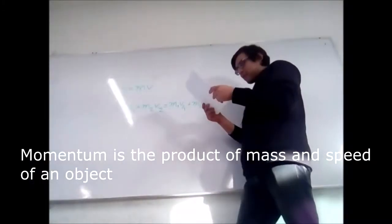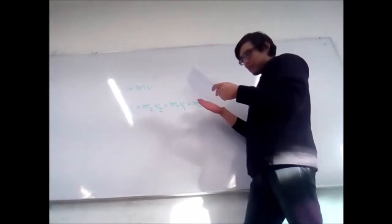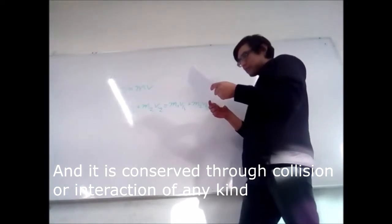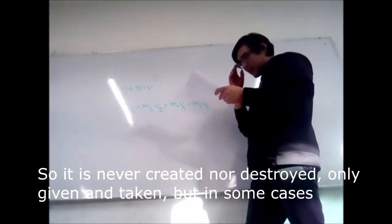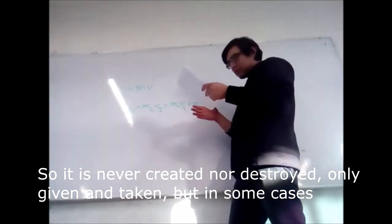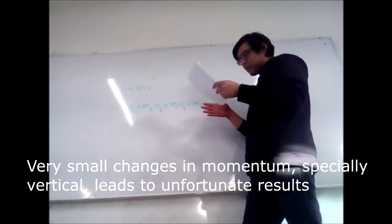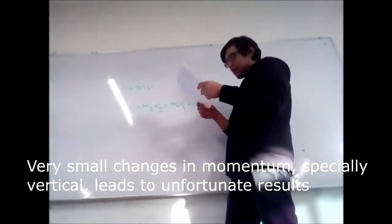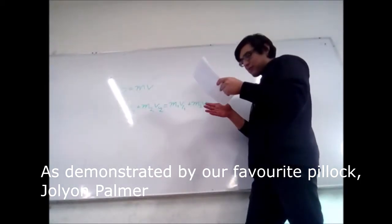As shown here, the amount of movement — or momentum — is simply the product of the mass and the velocity of the object. It is considered in any body or interaction; in any case, it is not destroyed, only exchanged. Although in some cases, small changes in movement — especially in the vertical direction — can have rather unfavorable results, as demonstrated by our favorite incompetent, Jonian Palmer.